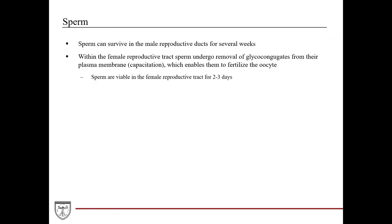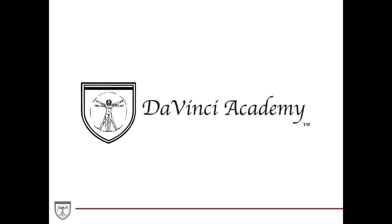Sperm can survive in the male reproductive tract for several weeks. Within the female reproductive tract, sperm undergo removal of glycoconjugates from their plasma membrane — a process known as capacitation — which enables them to fertilize the oocyte. Sperm are viable in the female reproductive tract for about two to three days. That closes out our second lecture on the male reproductive tract, where we covered spermatogenesis.